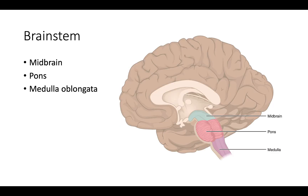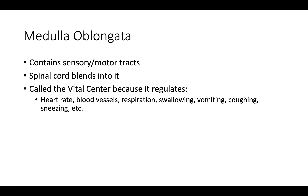The brainstem consists of the midbrain, pons, and medulla. The medulla contains sensory and motor tracts, blends directly into the spinal cord, and is called the vital center because it regulates heart rate, blood vessels, and respiration.